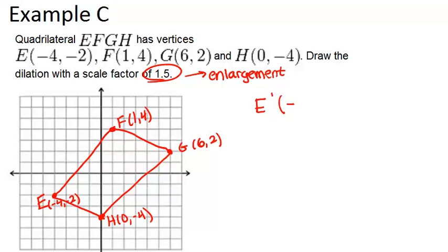what we're going to do is multiply -4 times 1.5. That's for our x-coordinate. And then -2 times 1.5 for our y-coordinate. That gives us (-6,-3). So E prime is the point (-6,-3). So we can start by plotting that. And we're right here.